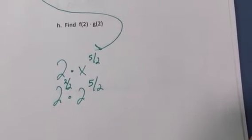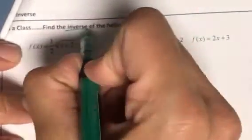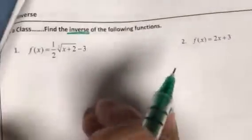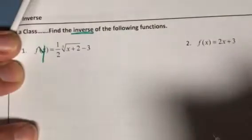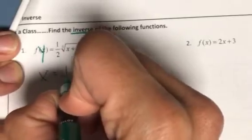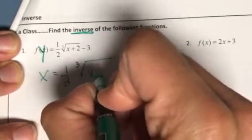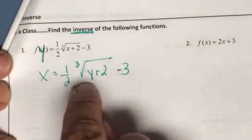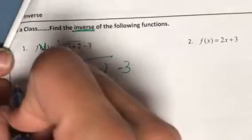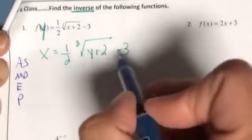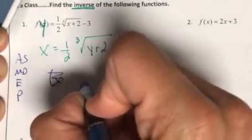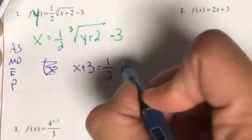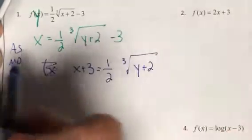We're now finding inverses — still chapter 5 review. The first step is to switch x and y. Then solve for y by working backwards through the order of operations. First, add 3 to isolate the cube root expression, so the right side becomes x + 3, and we still have one-half times the cube root expression.